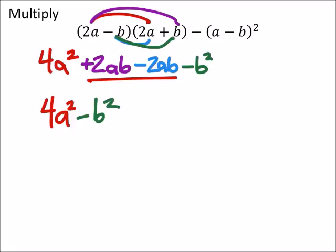Now this is all subtracted, or subtracting this a minus b. So I've got a minus b times a minus b.